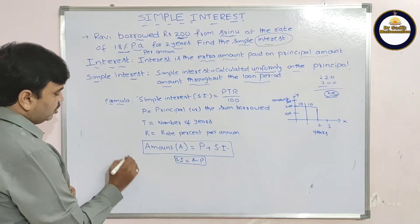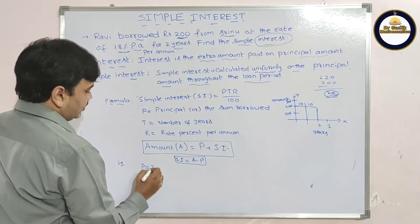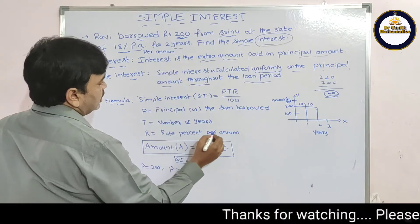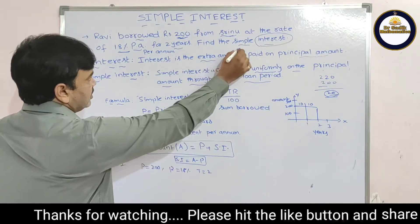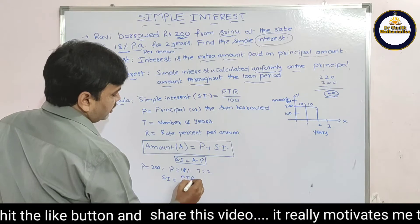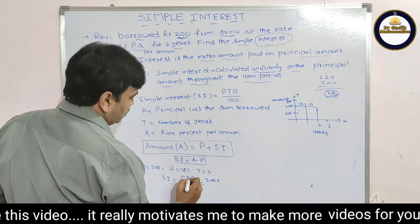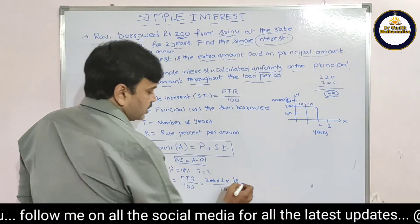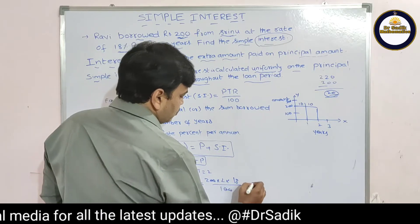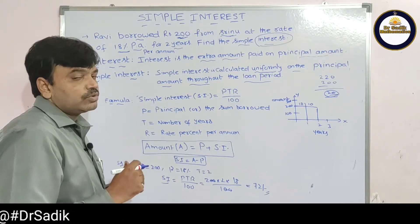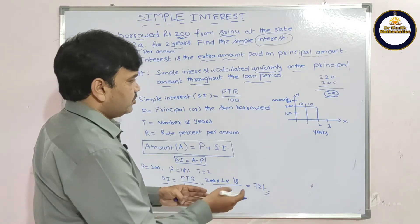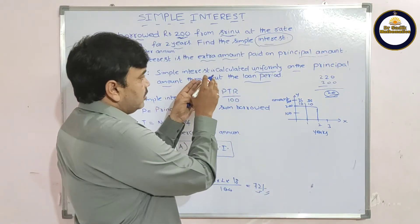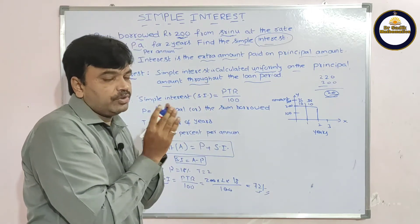Now let us solve the example using the formula. P = 200, R = 18%, T = 2 years. SI = 200 × 2 × 18 / 100. Cancel the two zeros: we get 2 × 18 = 36, then 36 × 2 = 72 rupees. The simple interest is 72 rupees. Applying our concept: for the first year SI is 36 and the second year SI is also 36 — calculated uniformly on the principal throughout the loan period.